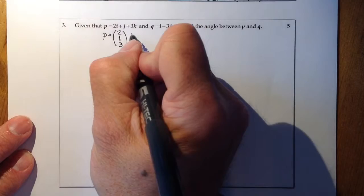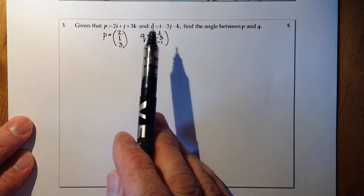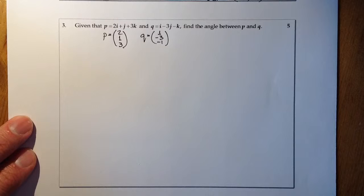For Q, if I write that in component form, I've got 1 for i minus 3 for j and minus 1 for k. And remember, if any of these are missing, it would be a value of 0 in component form.